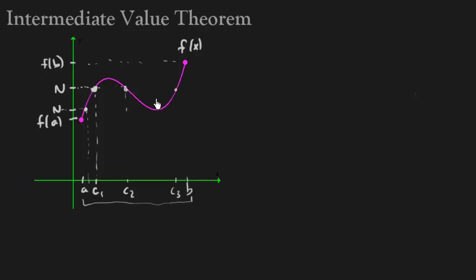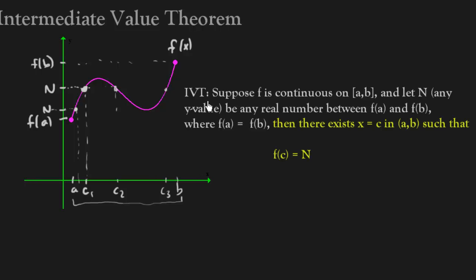So let me write out the official theorem. Now we usually use IVT to denote intermediate value theorem. Now suppose f, your function, is a continuous function on, now this is important, continuous, important, closed interval, important. So these two are the most important pieces of this theorem, minus the conclusion of it. So you've got to be continuous, you have to be at a closed interval.